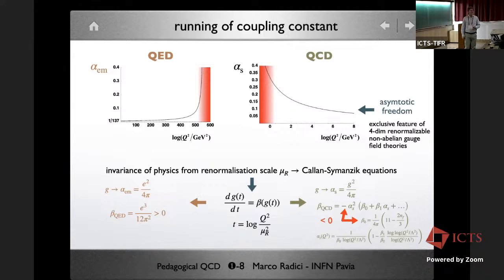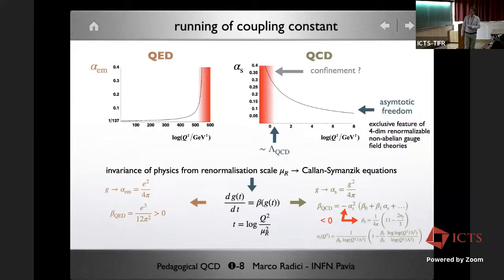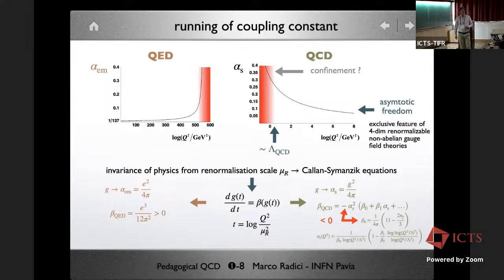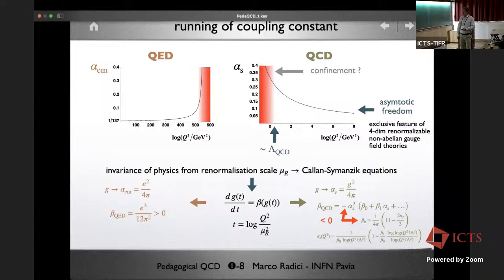The negative beta function in QCD means the running of the strong coupling constant is mirrored compared to QED: the higher the scale, the smaller the interaction strength. This is called asymptotic freedom, which earned the Nobel Prize for Gross, Politzer, and Wilczek. It is specific to non-Abelian renormalizable gauge field theories in four dimensions. At low scales below Lambda_QCD, perturbative expansions are no longer reliable — and what happens there relates to the problem of confinement, a Millennium Prize problem.